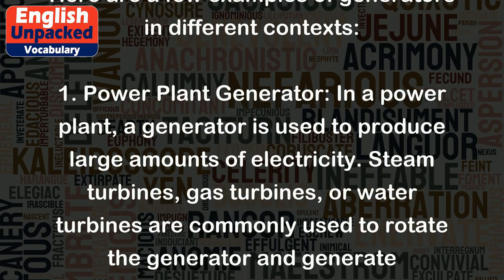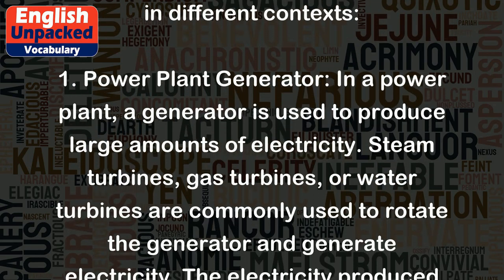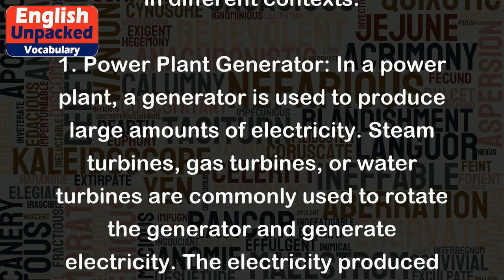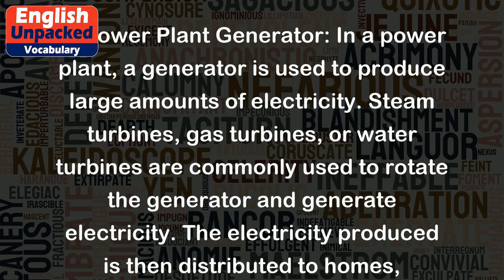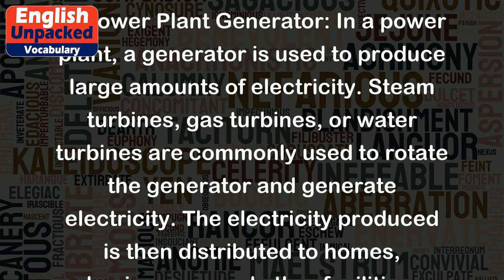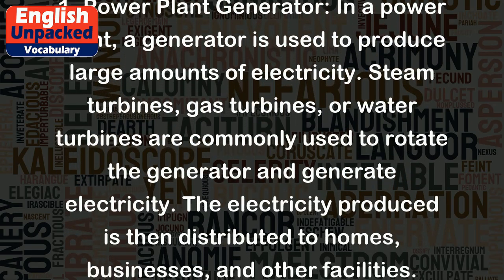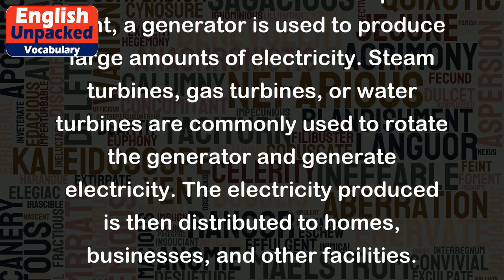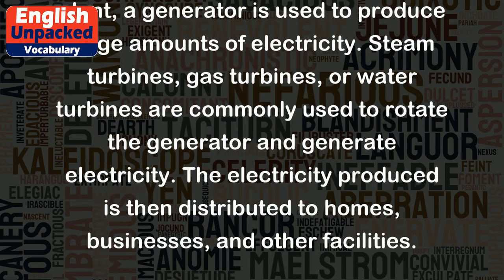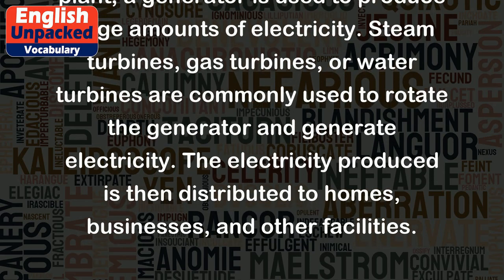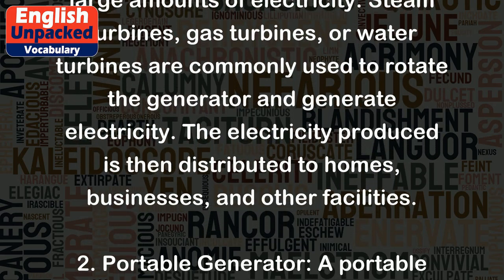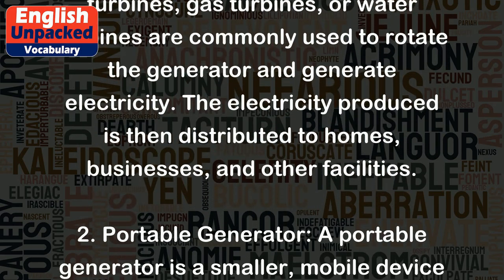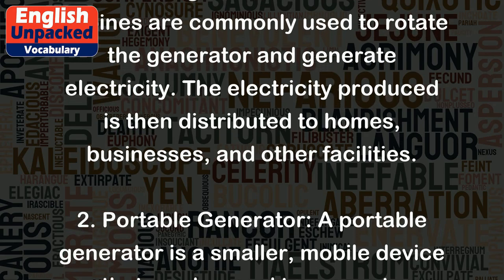Steam turbines, gas turbines, or water turbines are commonly used to rotate the generator and generate electricity. The electricity produced is then distributed to homes, businesses, and other facilities.